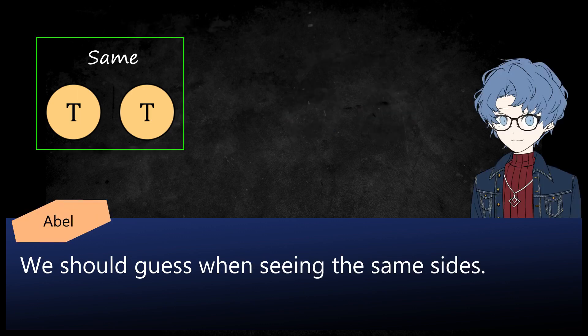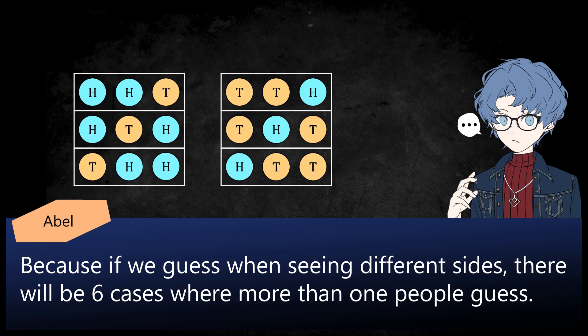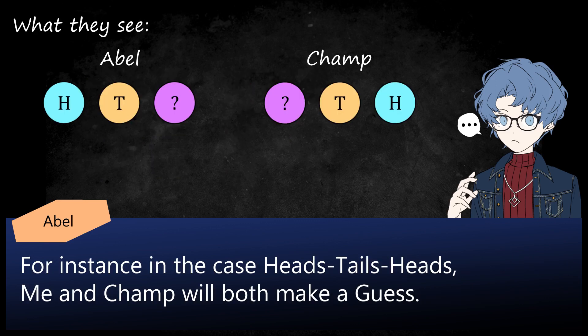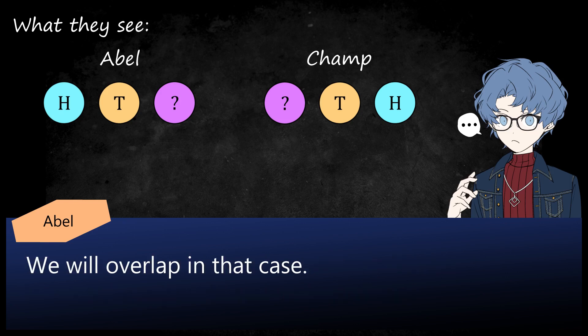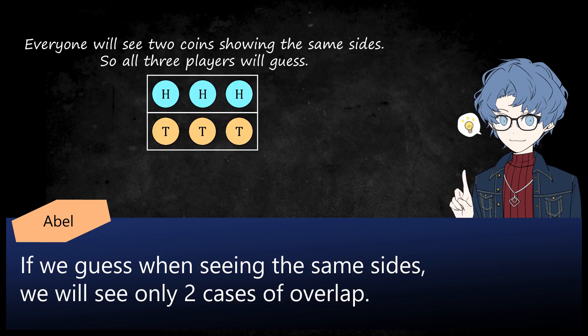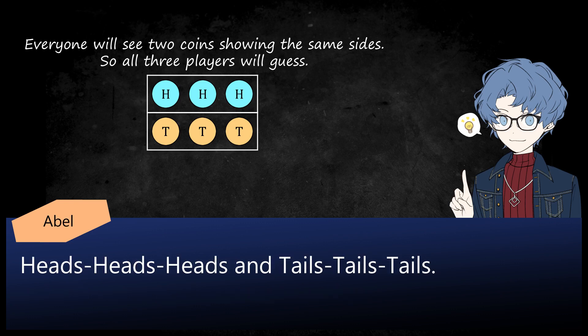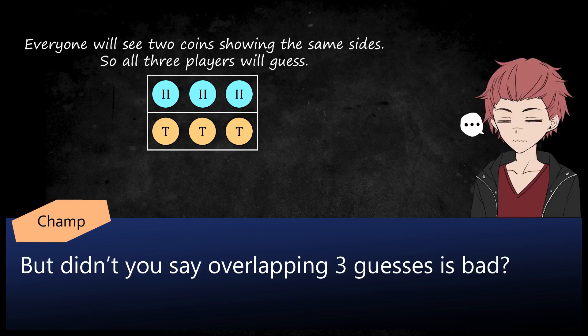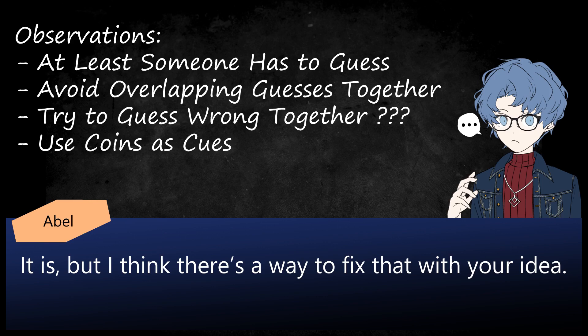"We should guess when seeing the same side, because if we guess when seeing different sides, there will be six cases where more than one person guesses. For instance, in the case heads-tails-heads, me and Champ will both make a guess — we will overlap in that case. If we guess when seeing the same sides, we will see only two cases of overlap: heads-heads-heads and tails-tails-tails." "But didn't you say overlapping three guesses is bad?" "It is, but I think there's a way to fix that."